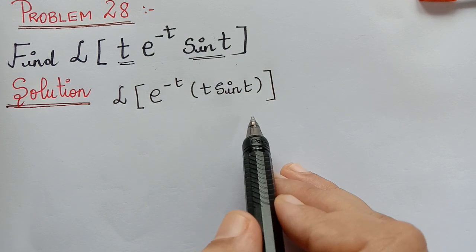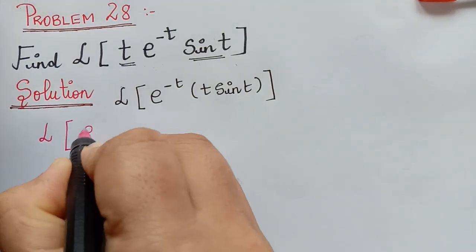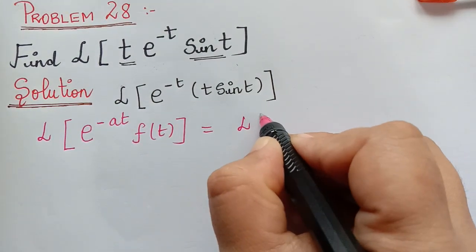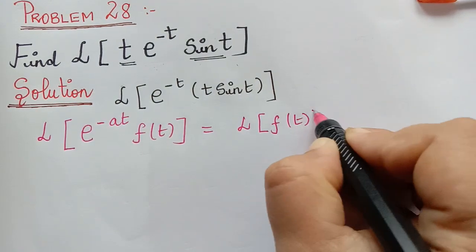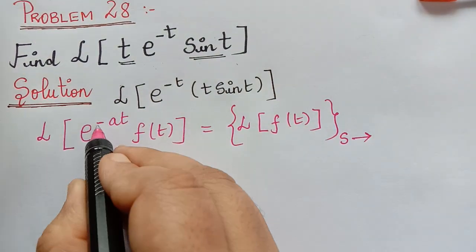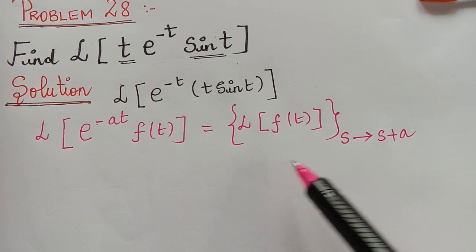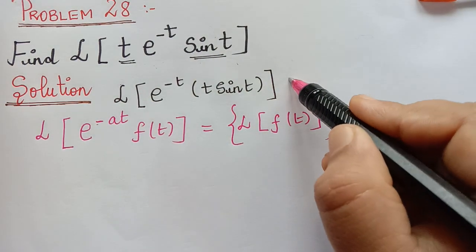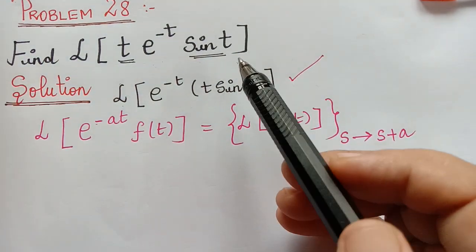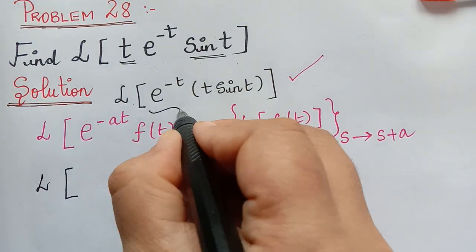As per the first shifting theorem, we know that the Laplace transform of e^(−at)·f(t) is equal to the Laplace transform of f(t) with s replaced by s+a. Here we have negative a, so s should be replaced by s+a. Let us now apply the first shifting theorem to find the solution.